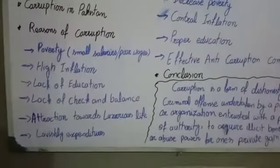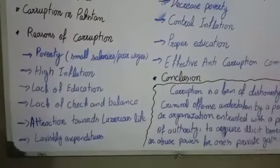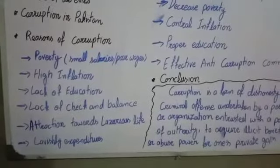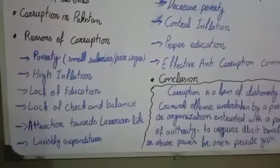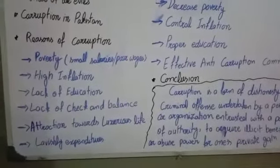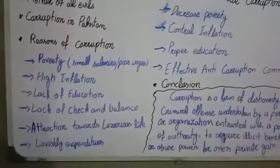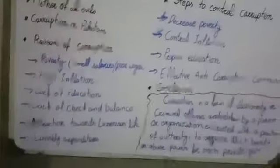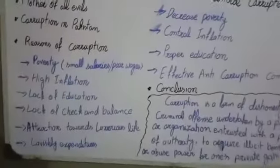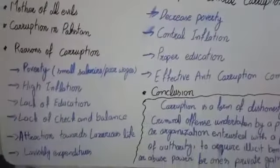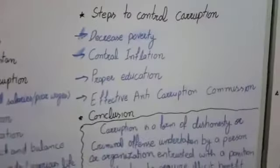ہمارے ہاں کچھ ایسے customs اور traditions بنا دیے گئے ہیں جن کو follow کرنا بہت ضروری سمجھا جاتا ہے — شادی بیاہ پر غیر ضروری اخراجات کرنا اور دوسرے functions پر اس قسم کی activities کی جاتی ہیں، جس کی وجہ سے خرچے ضرورت سے بڑھ جاتے ہیں اور ان خرچوں کو manage کرنے کے لیے لوگ corruption کی طرف جاتے ہیں۔